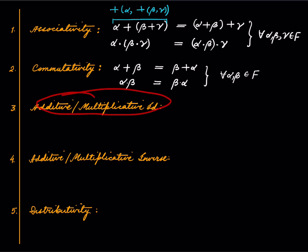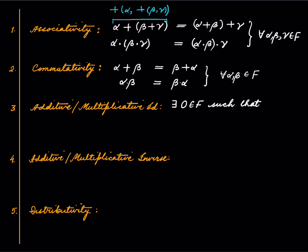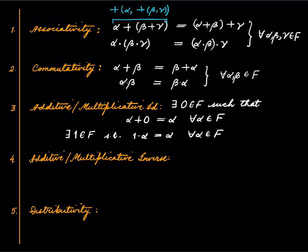The third property is the existence of additive and multiplicative identities. We insist there exists an element denoted 0 — and by 0 I don't mean the real number zero, just a symbol — which is in F such that α + 0 = α for all elements α. Similarly, we insist there exists another symbol written as 1 such that 1 · α = α for all α.